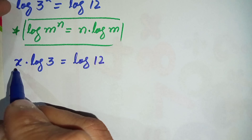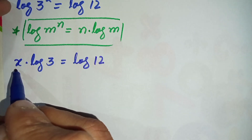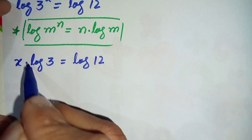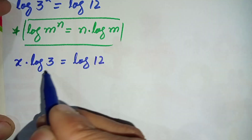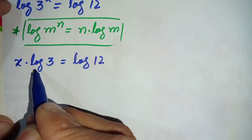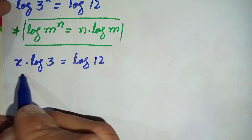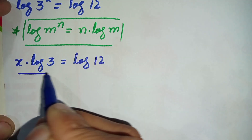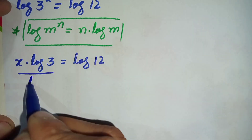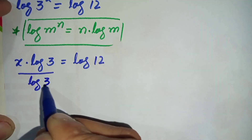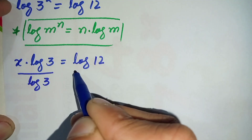So it will become x times log of 3 is equal to log of 12. Since our target is to find the value of x, we will try to eliminate log of 3 from the left hand side. To eliminate it, we will divide both sides by log of 3.